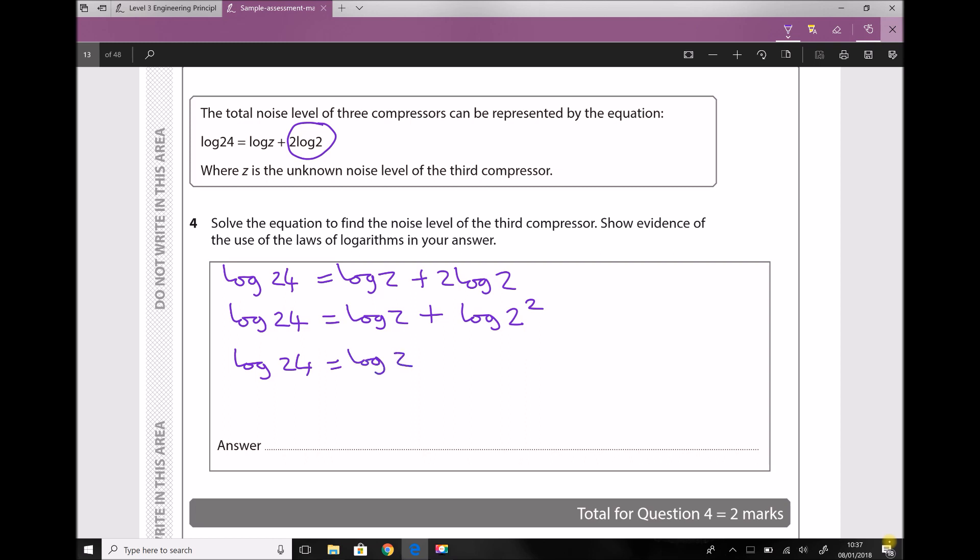Now the thing we're trying to find, z, is tied up in this expression here, so I need to get that expression on its own. I'm going to do that by subtracting log 4 from each side. So now we're going to get log z equals log 24 minus log 4.